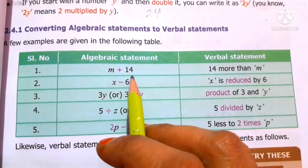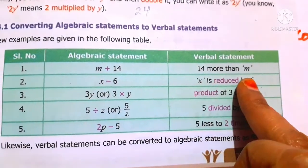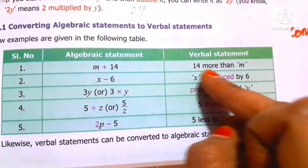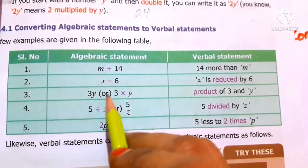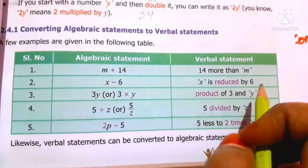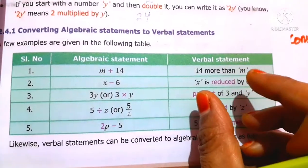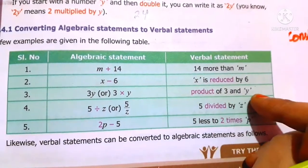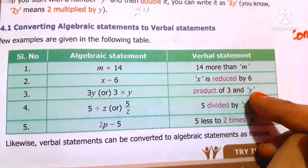First, m plus 14 — the verbal statement is: 14 more than m. Next, x minus 6 — x is reduced by 6. Then, 3y means the product of 3 and y — since product means multiplication, we say product of 3 and y. Next, 5 divided by z.